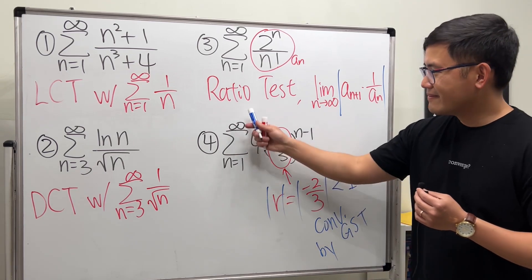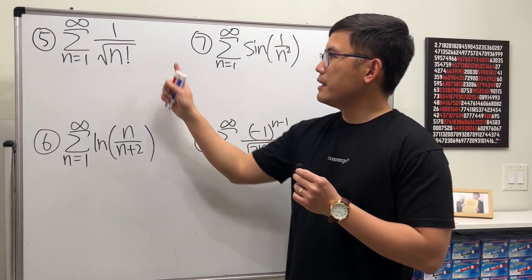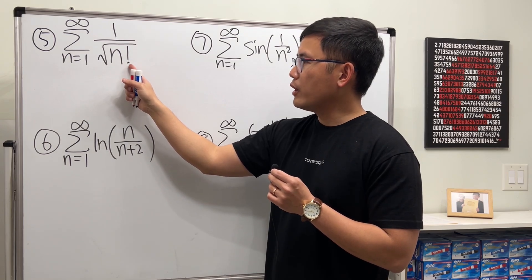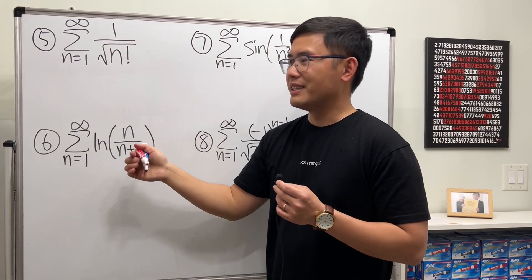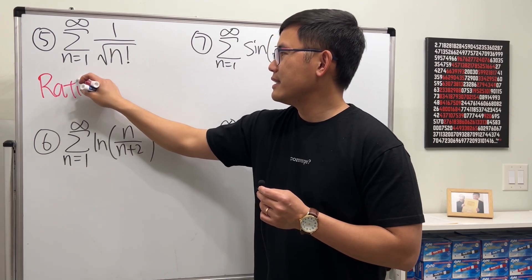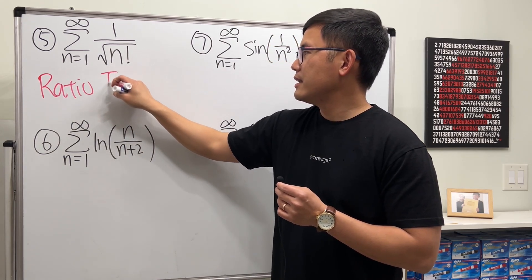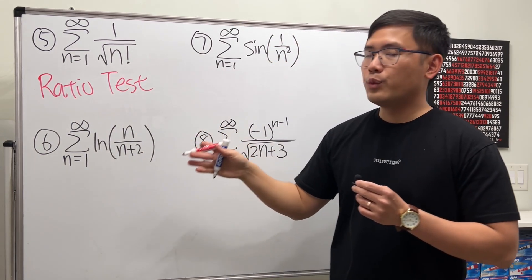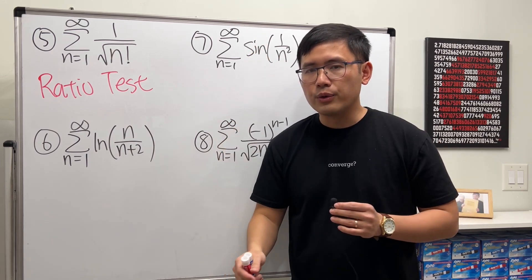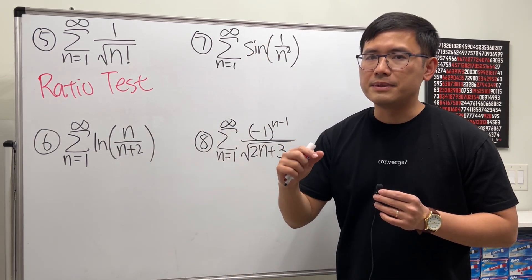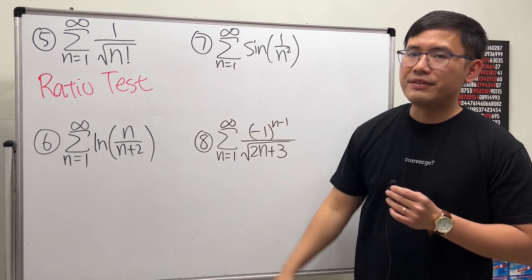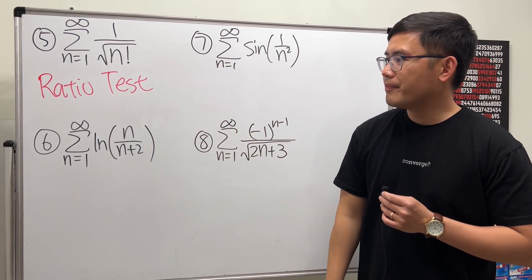Number five: we again see a factorial, so try the Ratio Test. Compute the limit as n goes to infinity of the absolute value of a_(n+1) times the reciprocal of a_n. I'll leave the full computation to you.